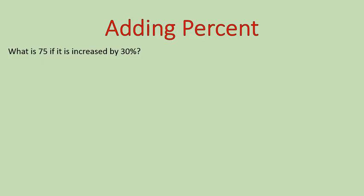The other types of questions I'm going to look at today are adding percents. If you get this: what is 75 if it is increased by 30%? When you're given a question like this, you have two different ways of solving it. I'm going to show you both ways on all of the questions. The first way is that you can find 30% of 75 and then add it to 75. We'll find 30% of 75 and then add that to our amount. So 30% of 75 — we'll convert 30% into a decimal, 0.3. Of means multiplying.